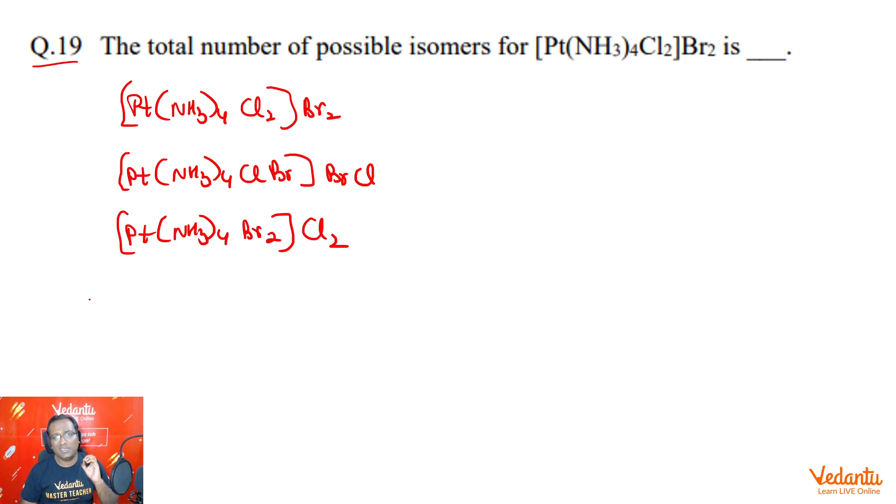Now, we do not take ammonia outside the coordination sphere. In general, it is observed that the neutral molecule present outside the coordination sphere is water only. So therefore, I am not taking ammonia here outside as one of the possible ionization isomers.